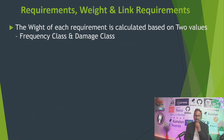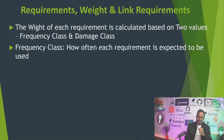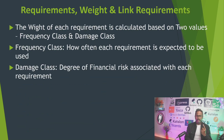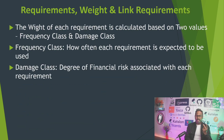This approach allows us to lower the risk for releasing the application to production. The weight of each requirement is calculated based on two values: frequency class and damage class. Frequency class means how often each requirement is expected to be used, and damage class is the degree of financial risk associated with each requirement.